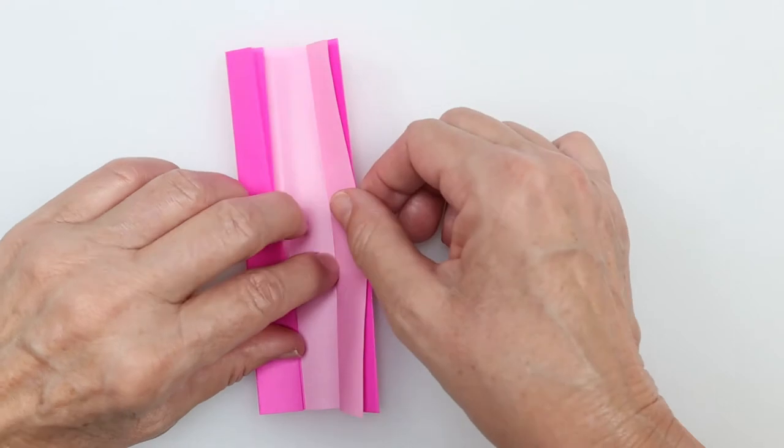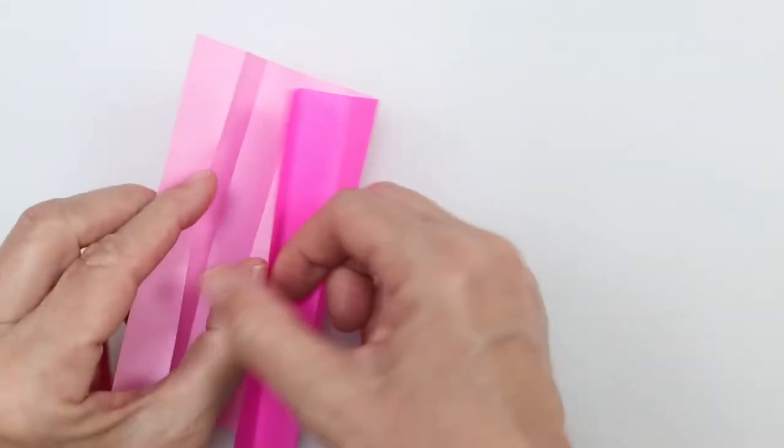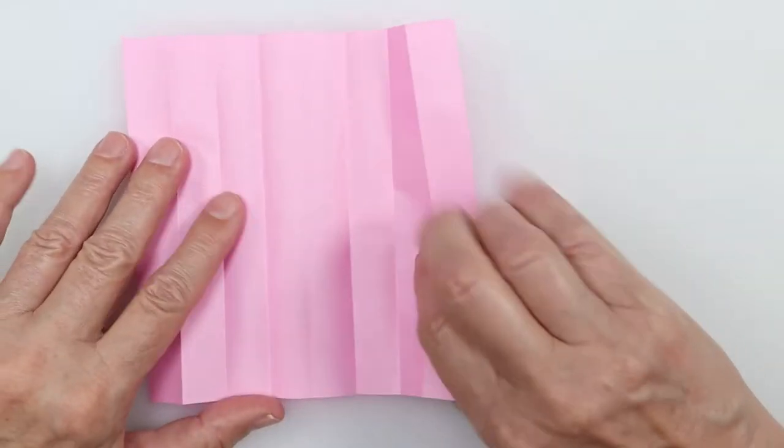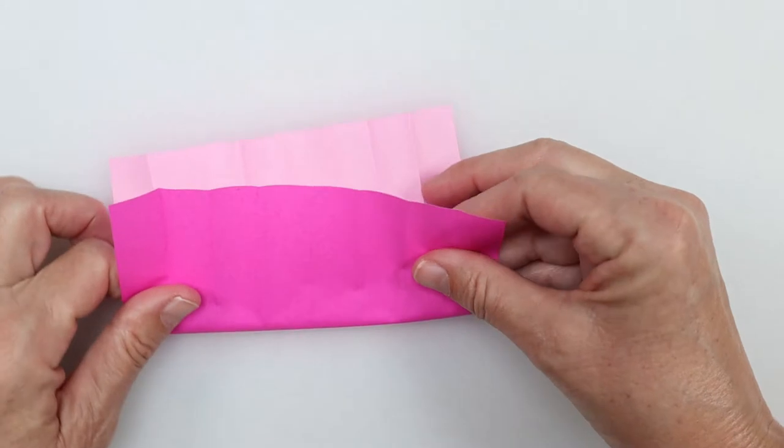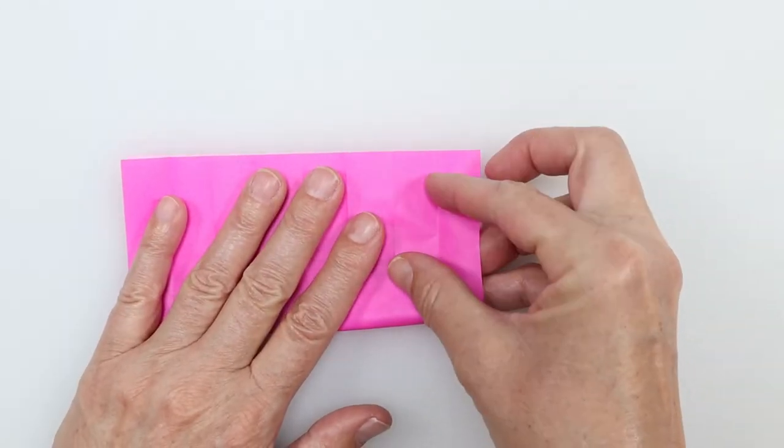And now I'm going to unfold all of these. I'll unfold everything, and you'll see there are eight long sections to this. Now the next step is I'm going to fold it all in half in the opposite direction.